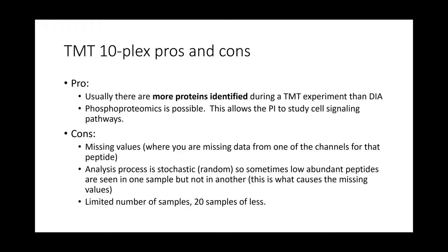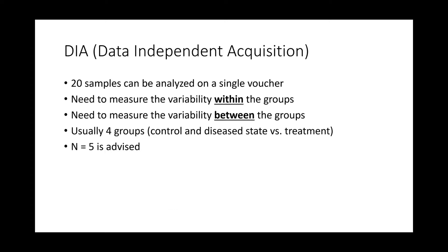The other con for a TMT 10-plex is that it has a limited number of samples. For labeled experiments, we suggest using TMT if you have 20 samples or less. If you have more than that, we would suggest using DIA.